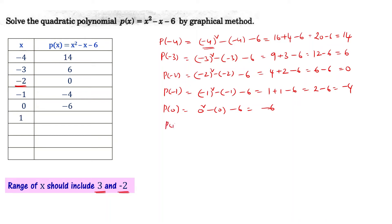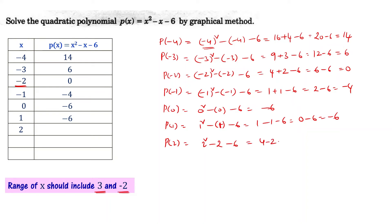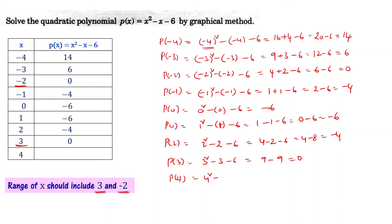For x = 1: P(1) = 1² - 1 - 6 = 1 - 1 - 6 = -6. For x = 2: P(2) = 2² - 2 - 6 = 4 - 2 - 6 = -4. For x = 3: P(3) = 3² - 3 - 6 = 9 - 3 - 6 = 0. So x = 3 is another zero!